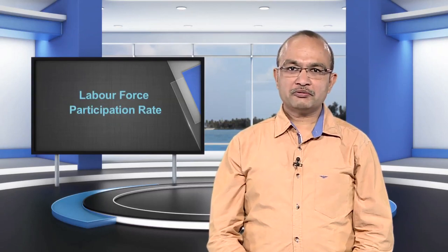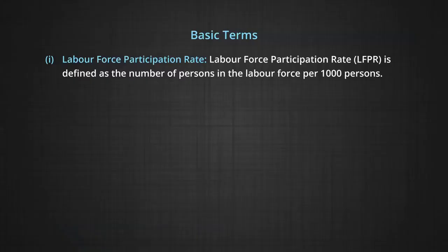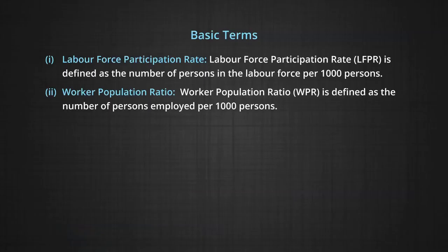We will now study the basic term: Labor Force Participation Rate (LFPR). LFPR is defined as the number of persons in the labor force per thousand persons. It includes people who are employed as well as those who are unemployed but are actively looking for jobs. Workers Participation Ratio (WPR) is defined as the number of persons employed per thousand persons.